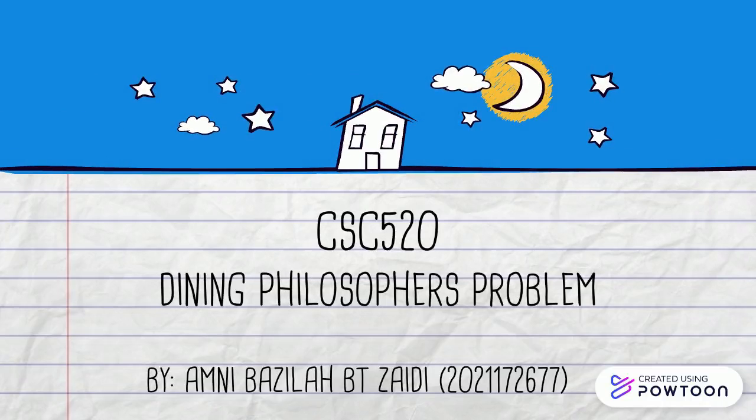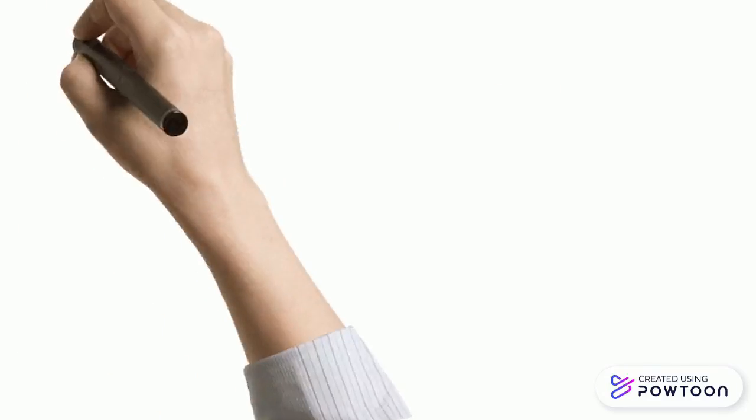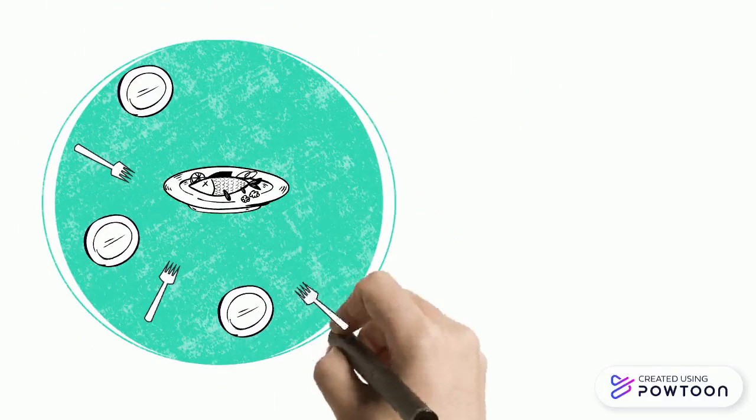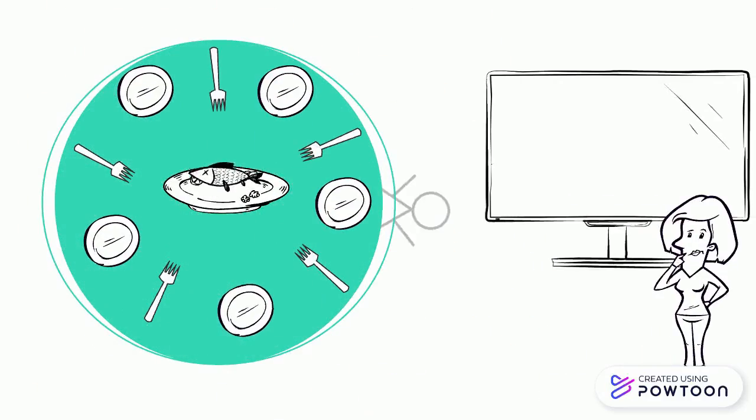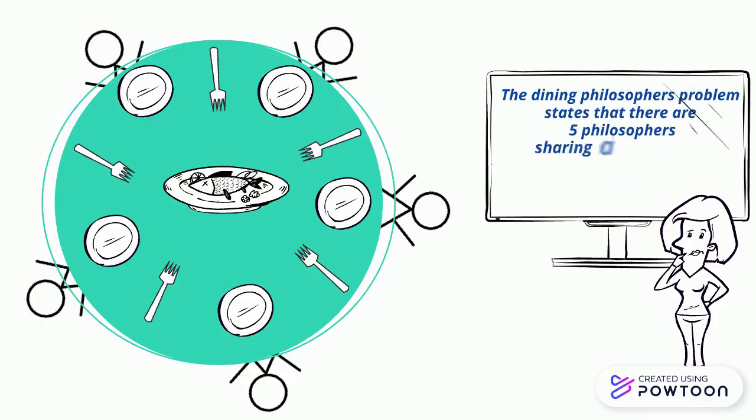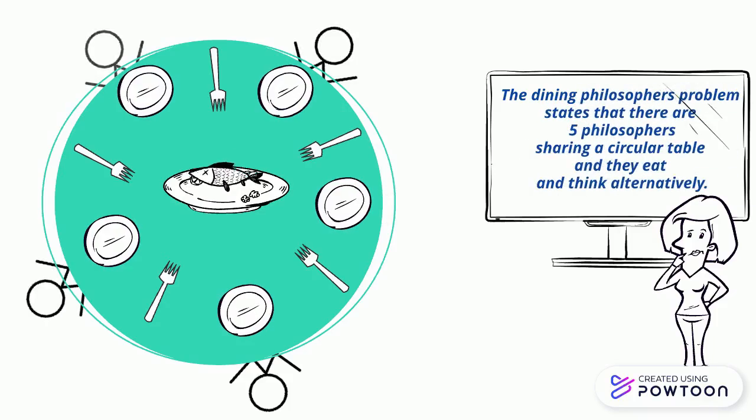The Dining Philosopher's Problem. The Dining Philosopher's Problem states that there are five philosophers sharing a circular table and they eat and think alternatively.